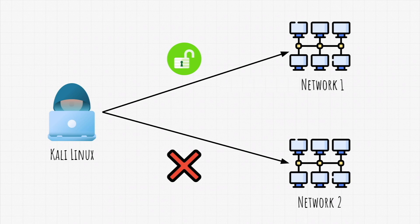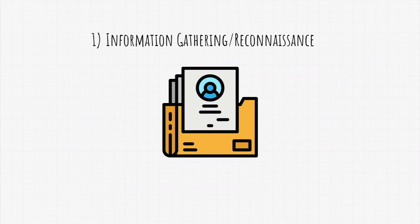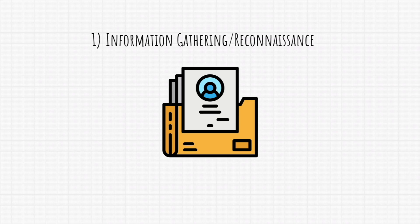There are five stages, and the first one is reconnaissance, or information gathering. Reconnaissance is the act of gathering information about your target to better plan out your attack. This is the only stage you can perform on any website or target without legal issues, since gathering information about something is not illegal. There are two ways to do it: actively, by directly interacting with your target, or passively, without interacting with the target at all.